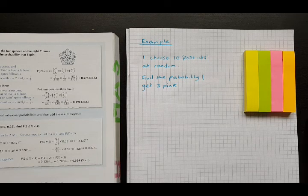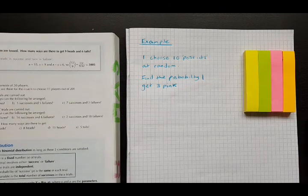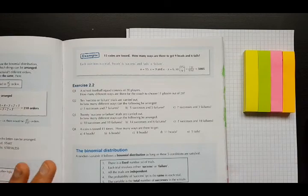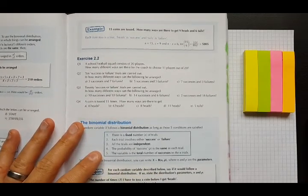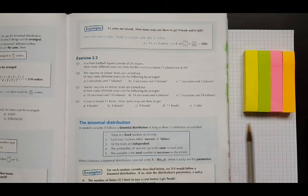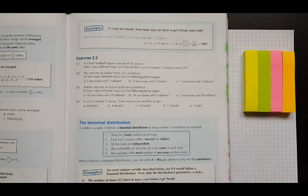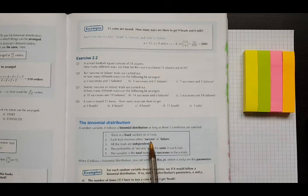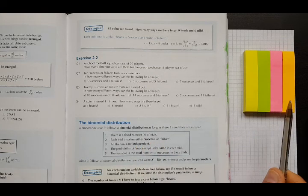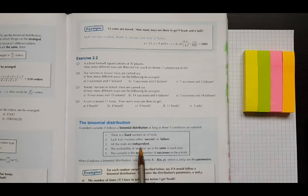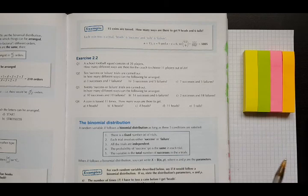On your book, page 187, it says you can use the binomial distribution if there are a fixed number of trials n. Well here, n is 10. I'm going to take 10 post-its, so I'm doing something 10 times. Each trial is a success or a failure. I'm interested in picking pink here, so pink is success and anything that isn't pink is a failure.